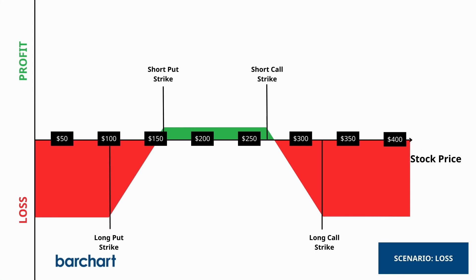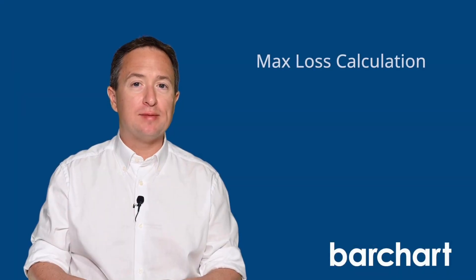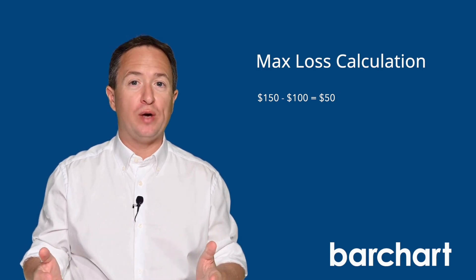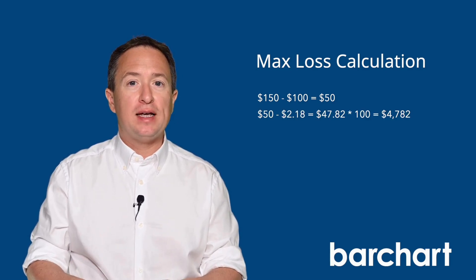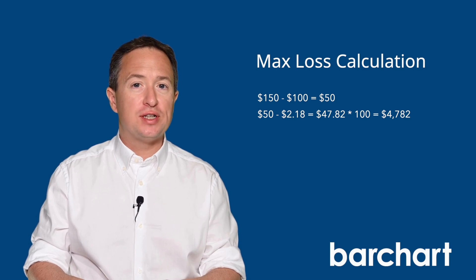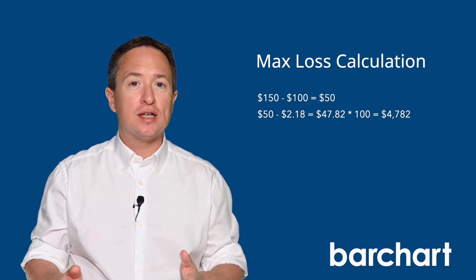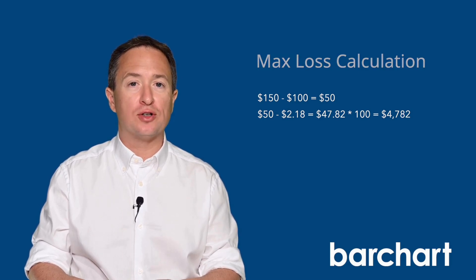If, however, the price of Tesla stock trades beyond your long options' strike prices, you'll hit the maximum loss condition for the trade. To calculate the maximum loss, you can take the difference between the strike prices on one side of the trade — that's called the width of the spread, or the spread width — and then subtract the net premium that you received at the start. In this case, the width is $50 and you collected $2.18 in premium, making your maximum loss $47.82, or $4,782 per contract.